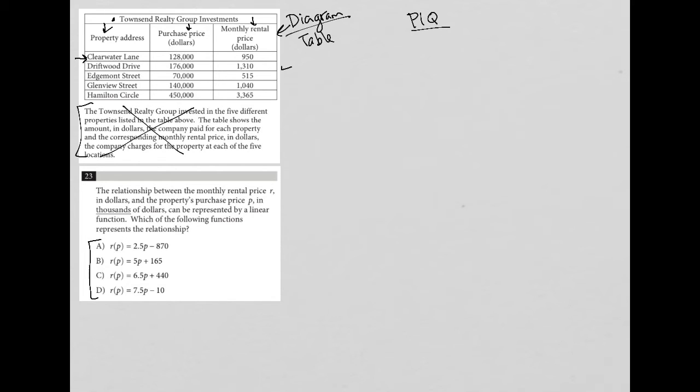The table here provides, and if we're focusing on Clearwater Lane, the table here provides the purchase price in thousands of dollars. So let's just write that down.